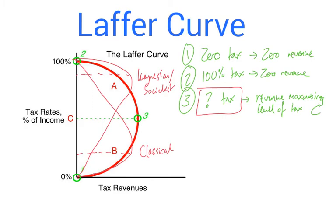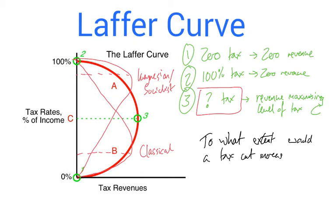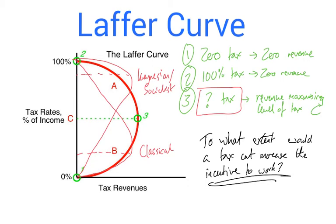The key question for supply-side theory is: to what extent would a tax cut increase the incentive to work? That's the central issue you need to address if you raise this in an essay — think about whether it will actually have the effect we suppose. Now, if reducing income tax rates is designed to pull people into the labour force, then reduction in benefits and welfare is designed to push people into the labour force. The aim is very solidly to get people off benefits and into work.